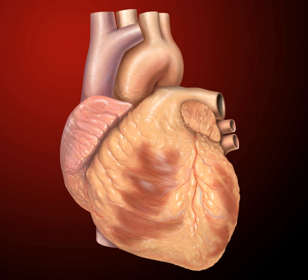The embryonic heart begins beating at around 22 days after conception, five weeks after the last normal menstrual period (LMP). It starts to beat at a rate near to the mother's, which is about 75 to 80 beats per minute. The embryonic heart rate then accelerates and reaches a peak rate of 165 to 185 BPM early in the seventh week. After nine weeks it starts to decelerate, slowing to around 145 ±25 BPM at birth. There is no difference in female and male heart rates before birth.